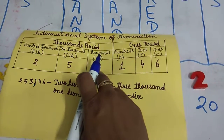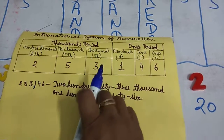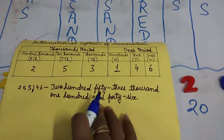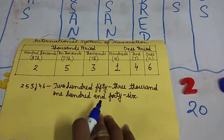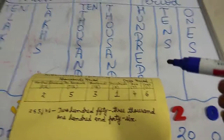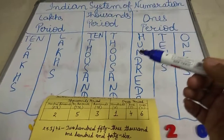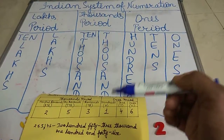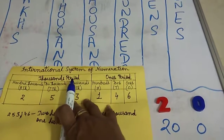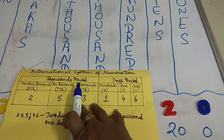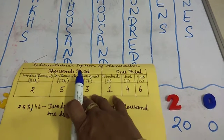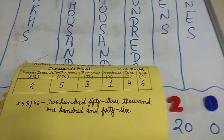So I hope you now understand the difference between the Indian system of numeration and the international system of numeration and their respective periods. Thank you.